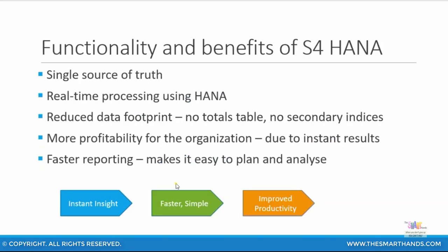Just quickly revisiting the functionality and benefits of SAP S4HANA: the single source of truth — that is the universal journal entry table — means that by accessing one single table, you will be able to capture all the information from just one extract of a database table. Previously, you had to consolidate multiple tables and use primary keys and foreign keys to find a common ground to link many of those tables. Also, with real-time processing using S4HANA and reduced data footprint — because no totals tables and no secondary index tables are required — by just having one single table, you have significantly reduced your data footprint.